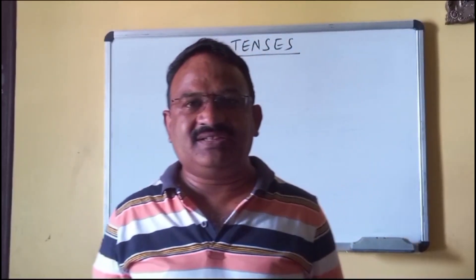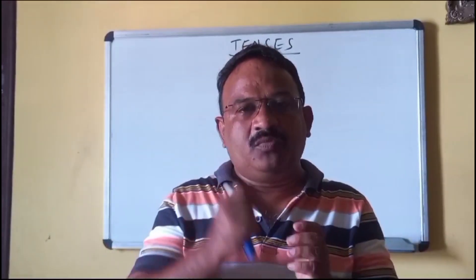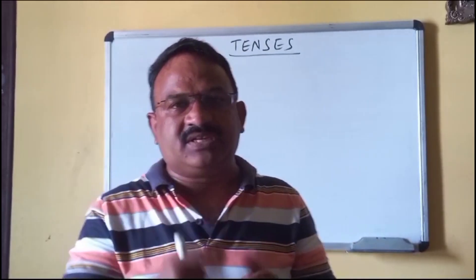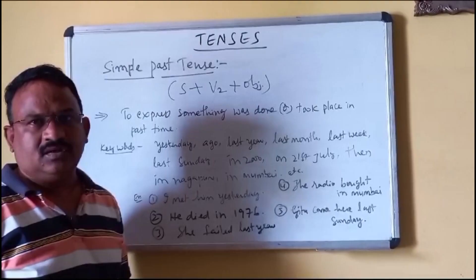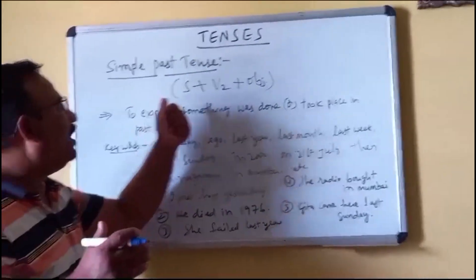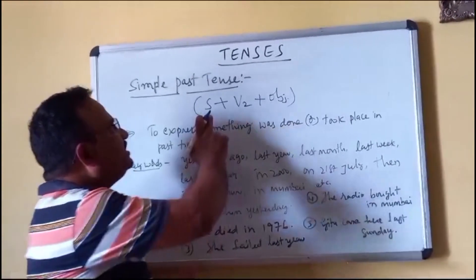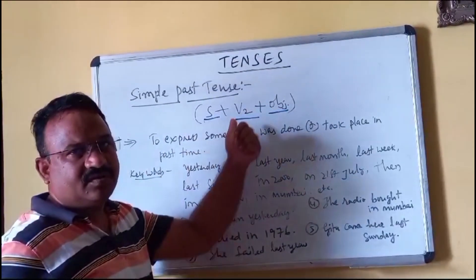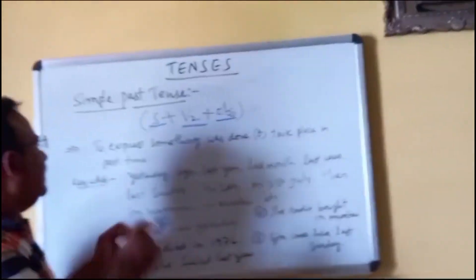Hi, this is Srinivas. Welcome back to my channel KSR English. Now we are going to discuss simple past tense. The structure is: subject plus V2 plus object.